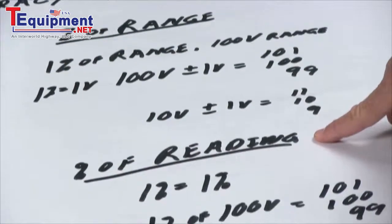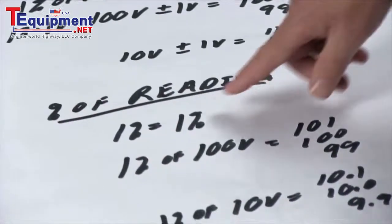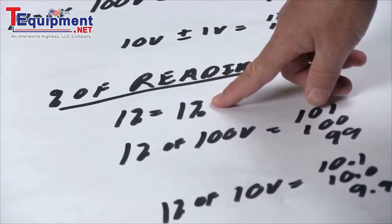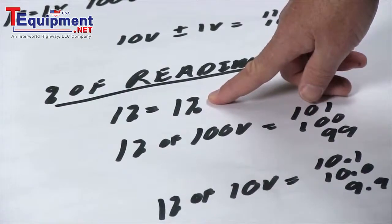A better way is to buy an instrument that has percent of reading, and then one percent is one percent. It doesn't matter what value or what range you're on.